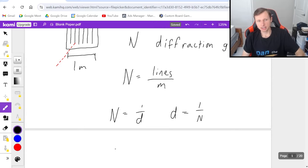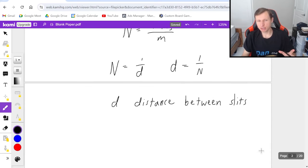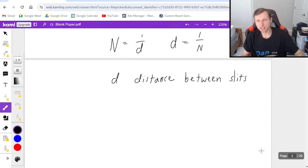But what is d? d is the distance between the individual slits of your diffraction grading. And because you have a distance between slits, this can essentially be modeled the exact same way as a Young's double slit experiment.